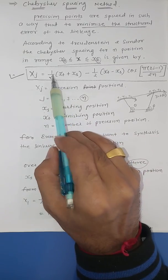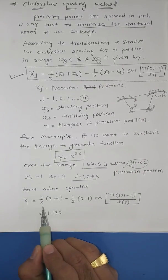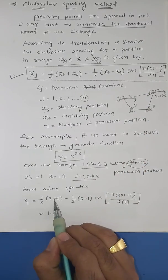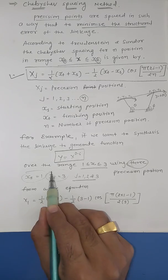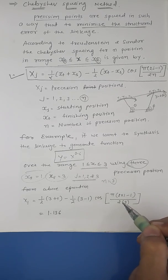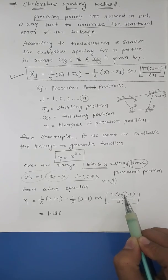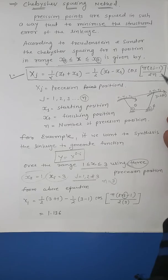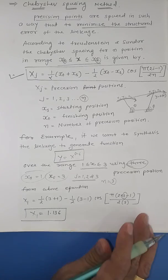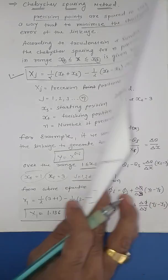From the above equation, we have to put the values of xf, xs, j, and n. xs is fixed, xf is fixed, and n is also fixed at three. What changes is j. For j = 1, putting the value into the equation, the answer for the first position x1 = 1.136.